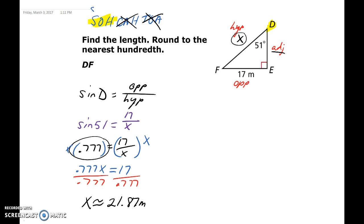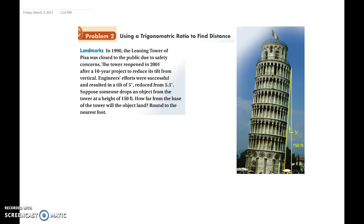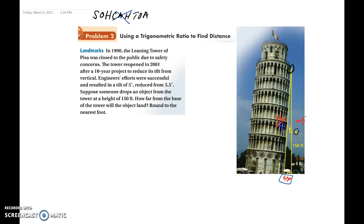There's one more question — a real-world application. In 1990, the Leaning Tower of Pisa was closed due to safety concerns and reopened in 2001 after a 10-year project reducing its tilt from 5.5 degrees to 5 degrees. Suppose someone drops an object from the tower at a height of 150 feet. How far from the base would the object land? We highlight the 5-degree angle, label opposite, adjacent, and hypotenuse, and use SOHCAHTOA. We want to solve for the opposite — how far it falls from the base.